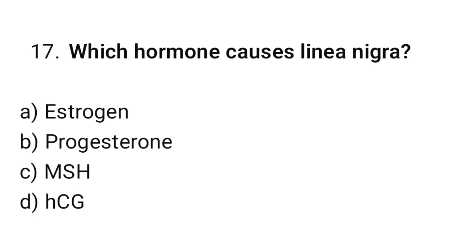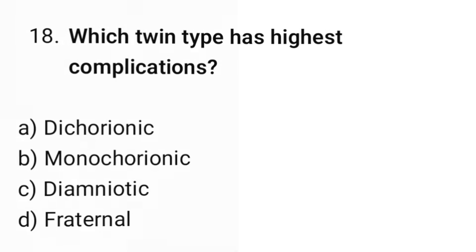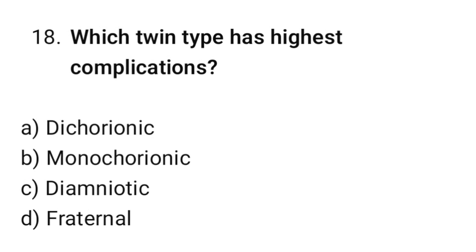Question number 17: Which hormone causes linea nigra? The correct option is C: MSH (melanocyte-stimulating hormone).